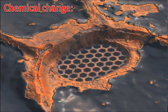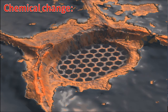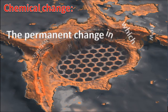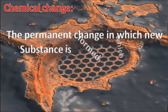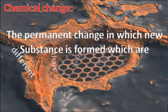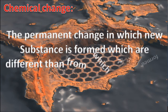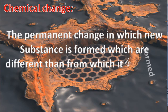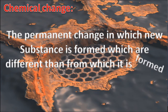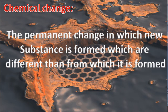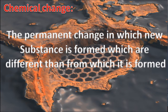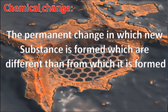Chemical Change. The permanent change in which new substances are formed, which are different from the substances from which they are formed, is called a chemical change.